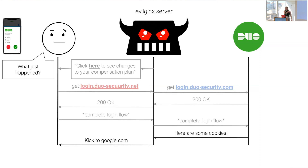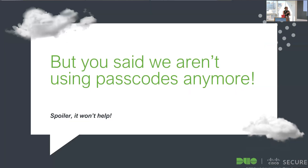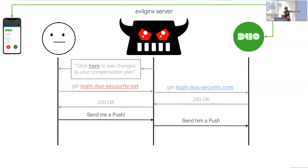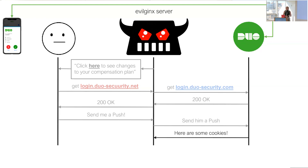The attacker then kicks you back to whatever website they want. These tools are open source, free, and take about five minutes to set up — just install nginx and write a YAML file. Even if you use push-based MFA like Duo Push, the login page looks exactly the same because it's being proxied. You see the option to send a Duo push, Duo sends it directly to your phone, you accept it because you asked for it — and that acceptance goes back to Duo, which then sends the cookies to the attacker.